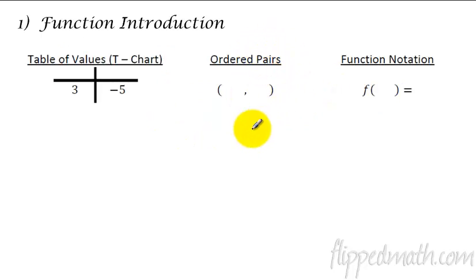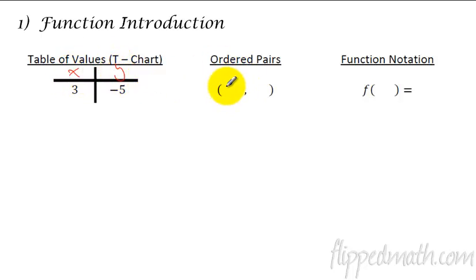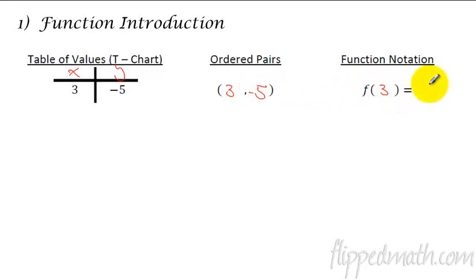Another thing we did in this lesson was understanding that values of x and y — so if this is x and y, that's the same thing as just putting it as a coordinate point, as an ordered pair. And when you're using function notation, that means that the x is plugged in as a 3, and what comes out is a y value of negative 5. It all means the same thing.